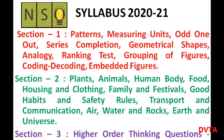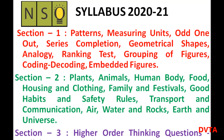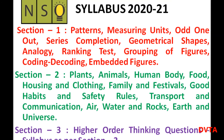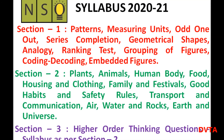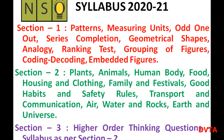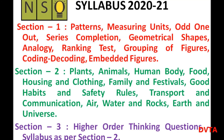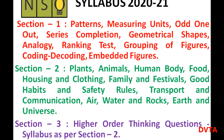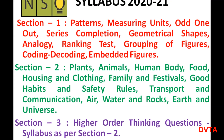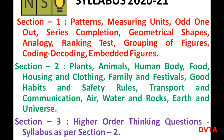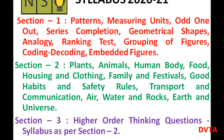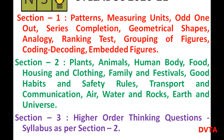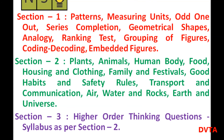Section 1: Patterns, measuring units, odd one out, series completion, geometrical shapes, analogy, ranking test, grouping of figures, coding decoding, embedded figures. Section 2: Plants, animals, human body, food, housing and clothing, family and festivals, good habits and safety rules, transport and communication, air, water and rocks, earth and universe.